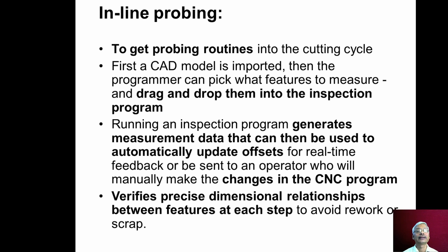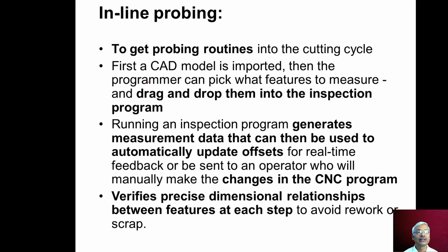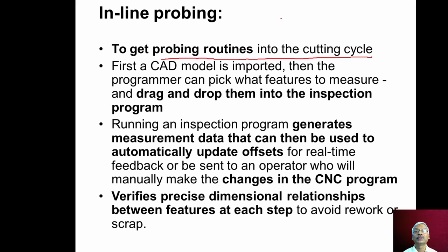The main objective of in-line probing is to get probing routines into the cutting cycle. This is not exactly gauging during machining. What we do is, in between different operations, we stop the machining and bring the stylus into position to check whether a particular feature is within the limits or not. If it is within the limit, we allow the next operation to continue.